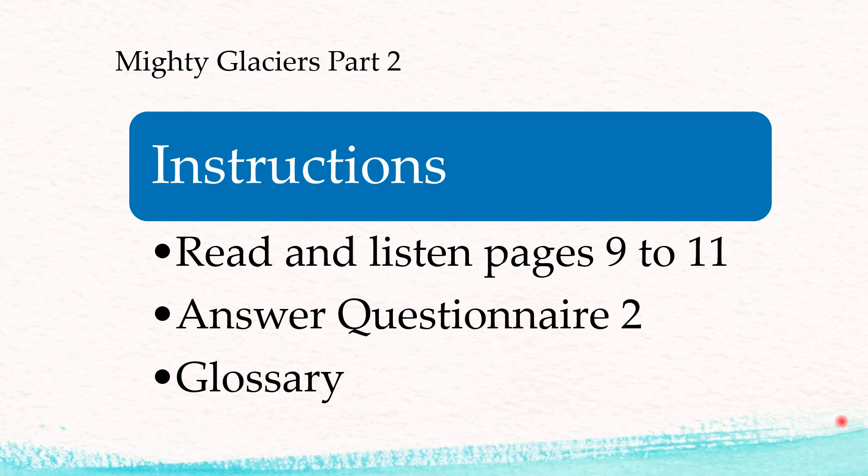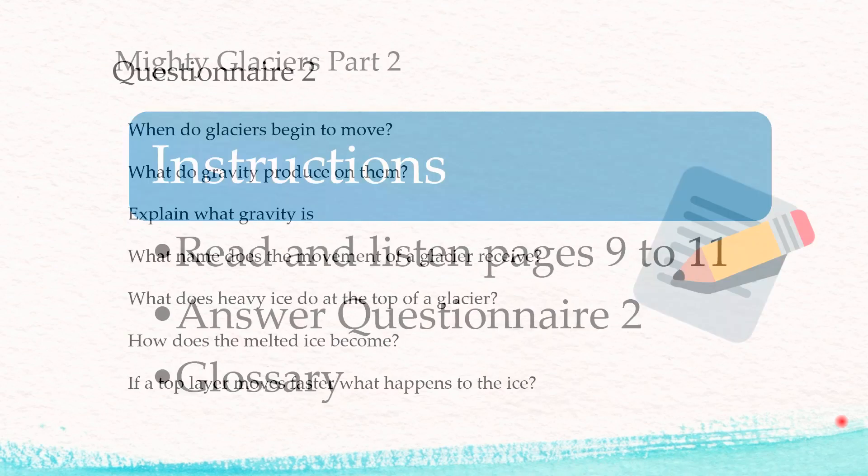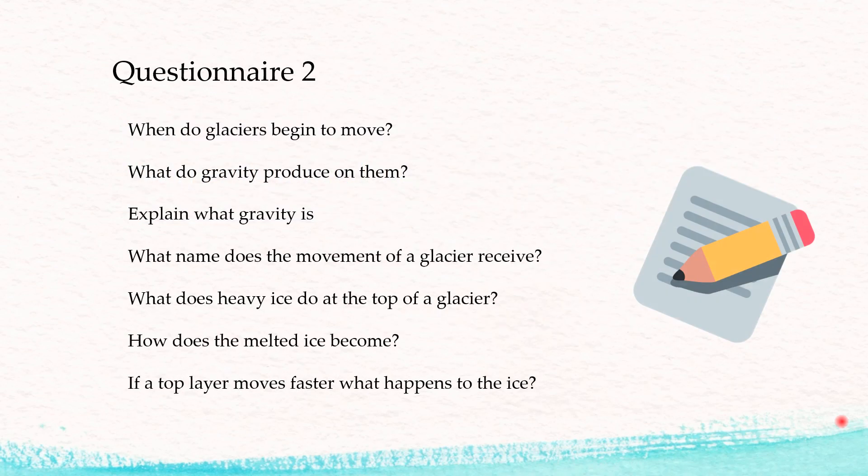Continental glaciers flow toward the coasts. Valley glaciers flow downhill. Now let's go to check the questionnaire.